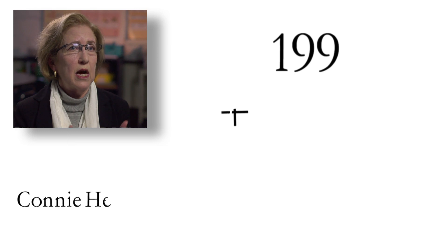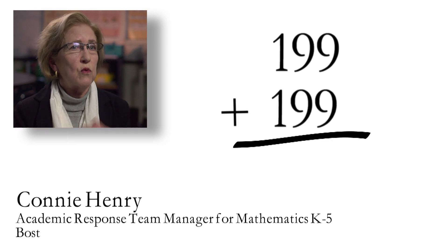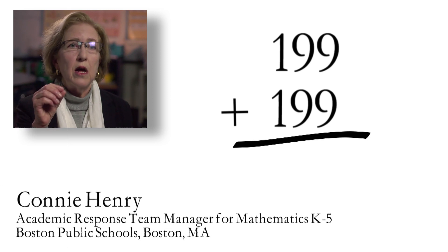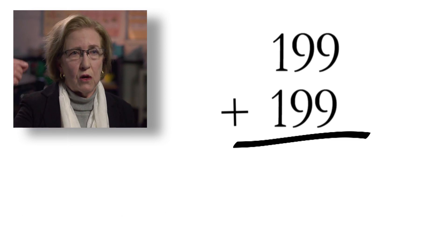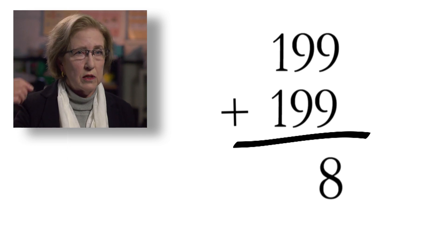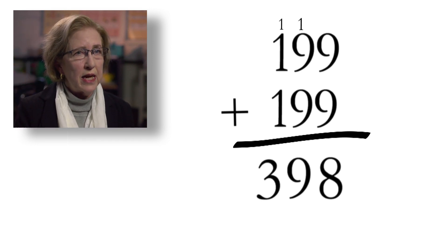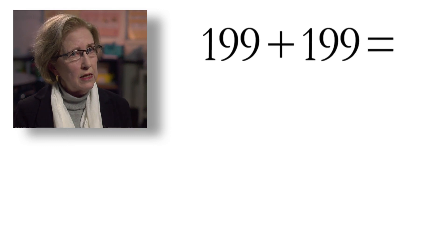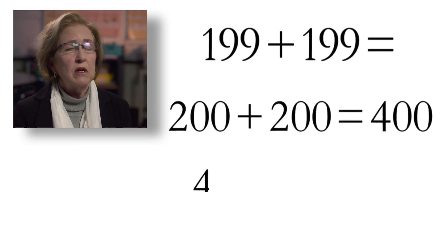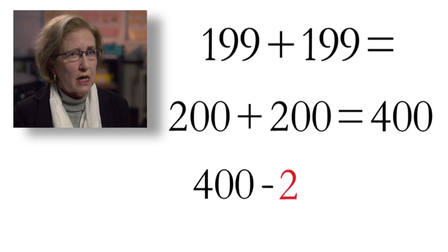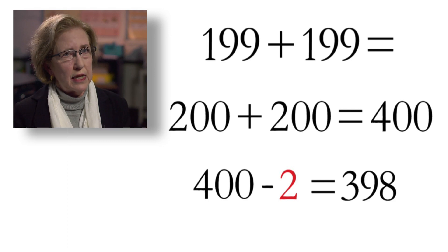If you think about the problem 199 plus 199, you can set it up as a standard algorithm. You can line them up neatly, go 9 plus 9 because you're taught to add the ones first, then make a little mark for the 1 you carry from 18 — which isn't actually a 1, it's a 10. Or you can think flexibly: 200 plus 200 is 400, and I need to take away 2 because each is only 199. The answer is 398. That is the kind of flexibility and thinking you want to encourage.